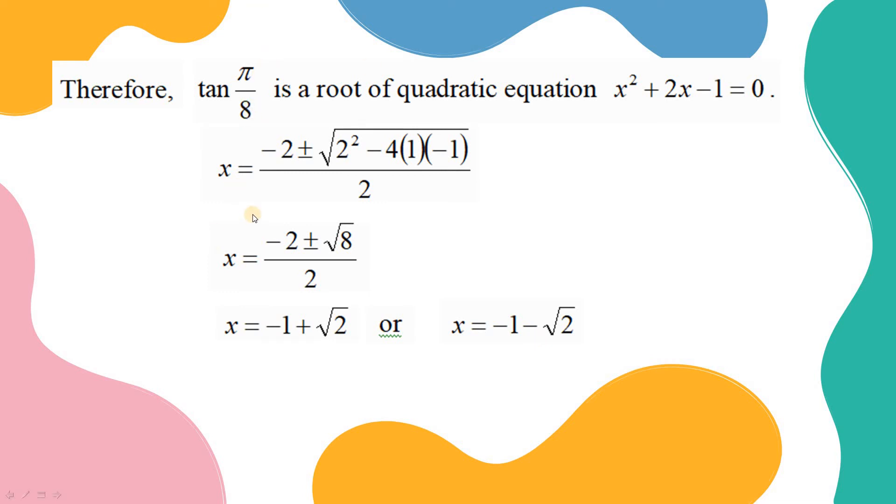As pi over 8 equals 22.5 degrees, in this region tangent is positive. Therefore, the later value is rejected. The former must be the value of tangent pi over 8.